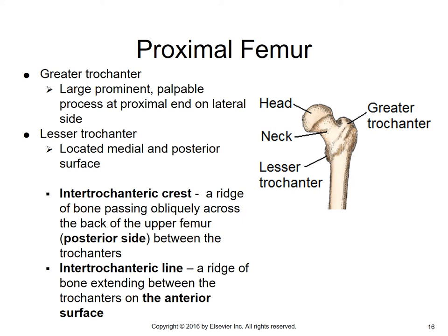There are two areas of bony ridges between the trochanters — one on the anterior side and one on the posterior side. The intertrochanteric crest is a ridge of bone passing obliquely across the back of the upper femur, on its posterior side between the trochanters. The intertrochanteric line is a ridge of bone extending between the trochanters on the anterior surface. So: intertrochanteric crest is posterior, and intertrochanteric line is anterior.